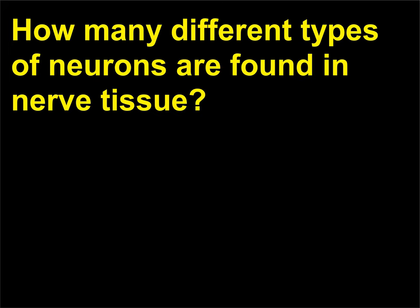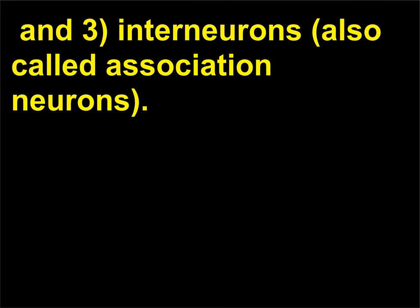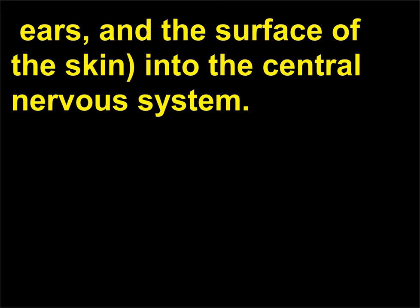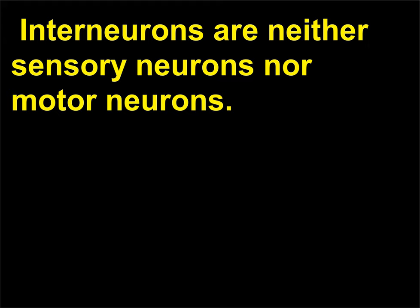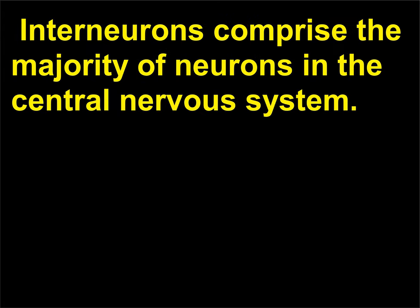How many different types of neurons are found in nerve tissue? There are three main types of neurons: (1) sensory neurons, (2) motor neurons, and (3) interneurons, also called association neurons. Sensory neurons conduct impulses from sensory organs — eyes, ears, and the surface of the skin — into the central nervous system. Motor neurons conduct impulses from the central nervous system to muscles or glands. Interneurons are neither sensory nor motor neurons; they permit elaborate processing of information to generate complex behaviors and comprise the majority of neurons in the central nervous system.